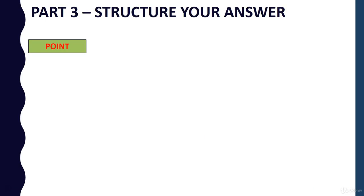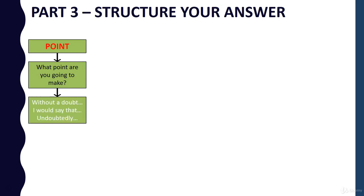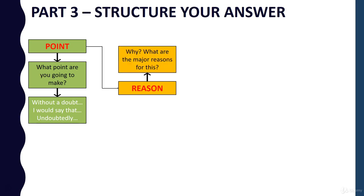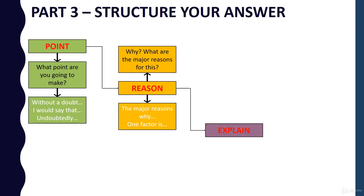First of all you need to make a point. This is a bit like the topic sentence in a paragraph in your essay. So think about the point that you're going to make in your answer — 'without a doubt', 'undoubtedly' — and then you have to give a reason why you're making this point. So what are the major reasons for it? 'The major reasons why', 'one factor is'.